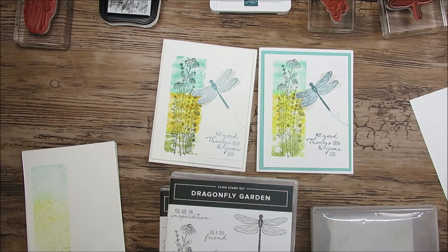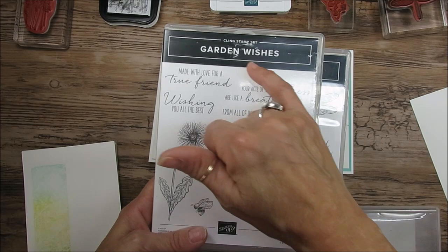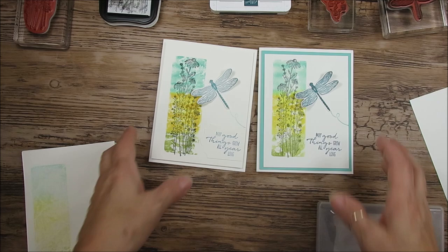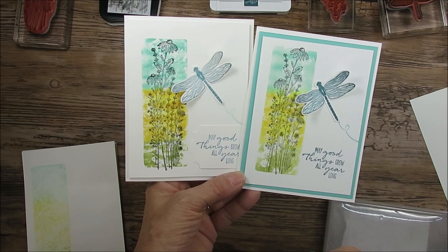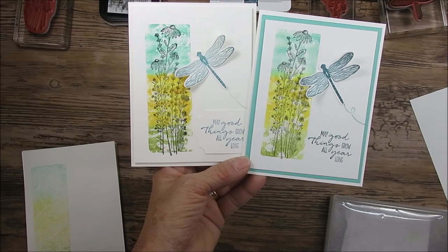Today it's a quick and simple card with the Dragonfly Garden and I'm going to use the Garden Wishes for the little flight pattern here. So this is a great way to use a detailed stamp set that you don't want to color. Many say I'm afraid of coloring and it takes long. Well this technique here is very simple and fun.